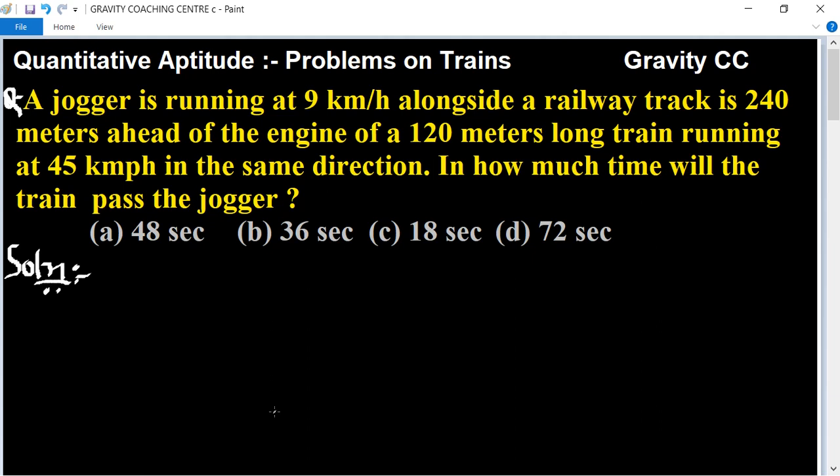So in this question, the speed of the jogger is given as 9 kmph and the speed of the train is 45 kmph. So now we use the formula.